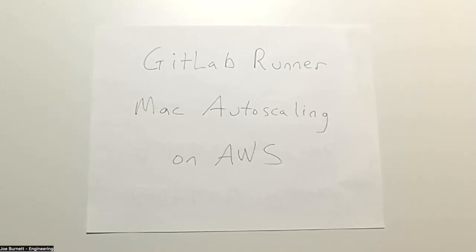Hey, this is Joseph Burnett. I'd like to explain to you a little bit about how we do Mac Runner autoscaling on AWS. There's a little bit more to it than autoscaling Linux. There's a few more layers of abstraction, so I wanted to just kind of walk through it with a concrete visualization.